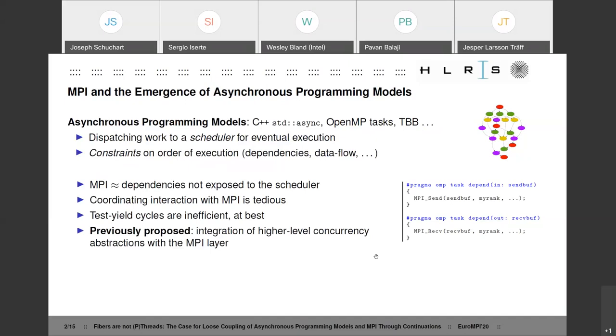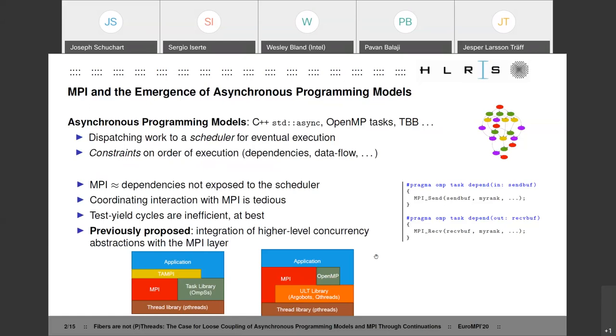Previously what has been proposed is the integration of higher level concurrency abstractions with the MPI layer. One proposal was the task-aware MPI which sits as a slim layer between the application MPI and the tasking library, supporting UMS. Another proposal was to integrate so-called user level thread libraries like Argobots and Q threads into MPI implementations. Whenever the application makes a call into MPI that will block, MPI would trigger a scheduling decision in the ULT library. The problem is that none of that is portable. Task-aware MPI only works with UMS. In the case of the integrated ULT libraries, you don't even know if your MPI library has ULT libraries integrated or whether it's the right one. So the code that you see here is likely to deadlock. This is not portable code.